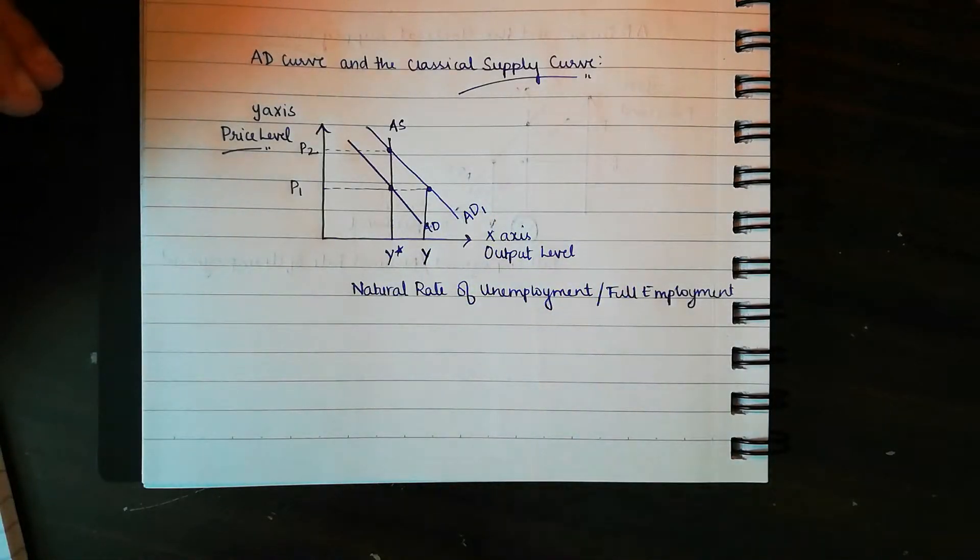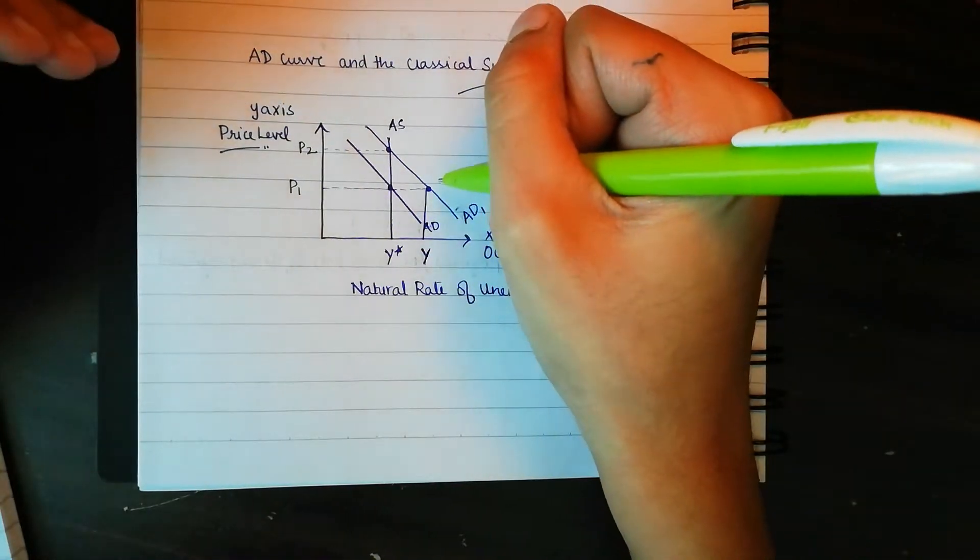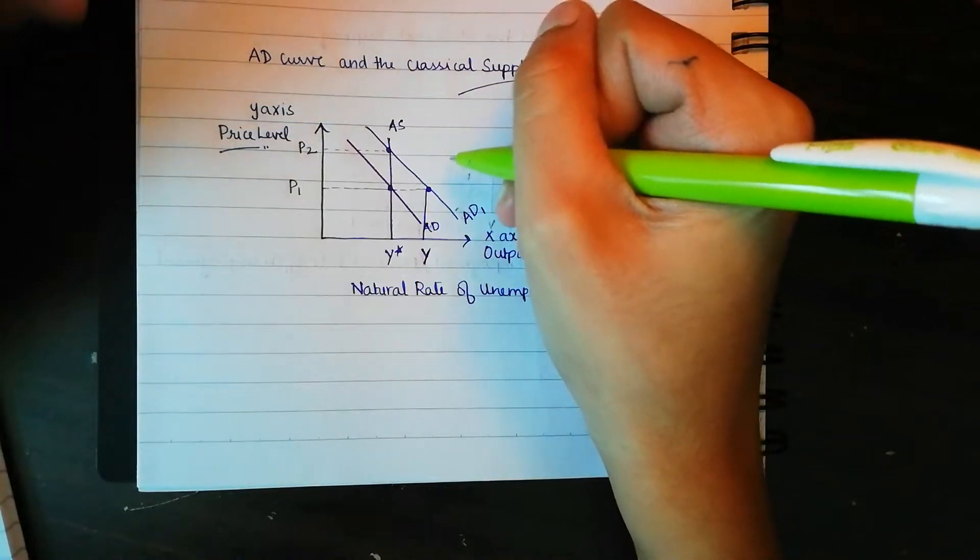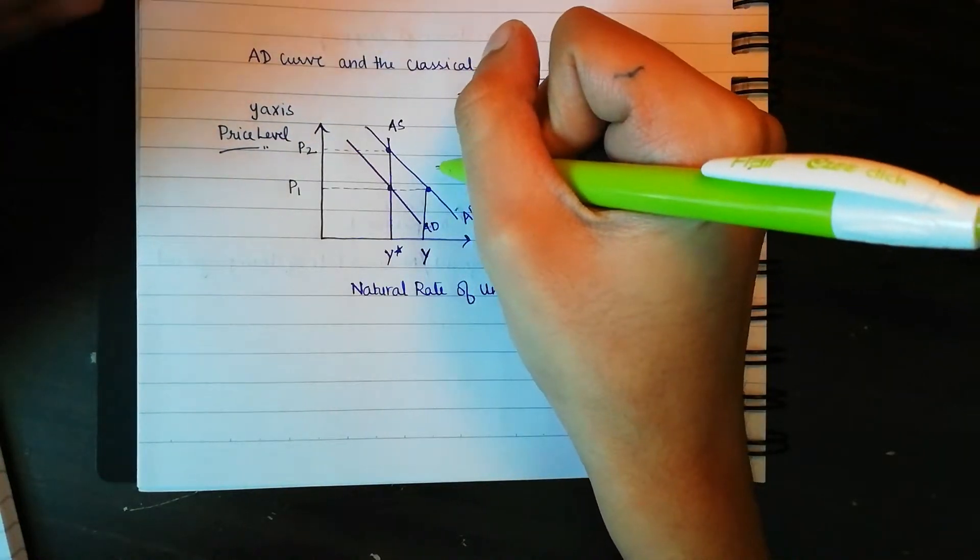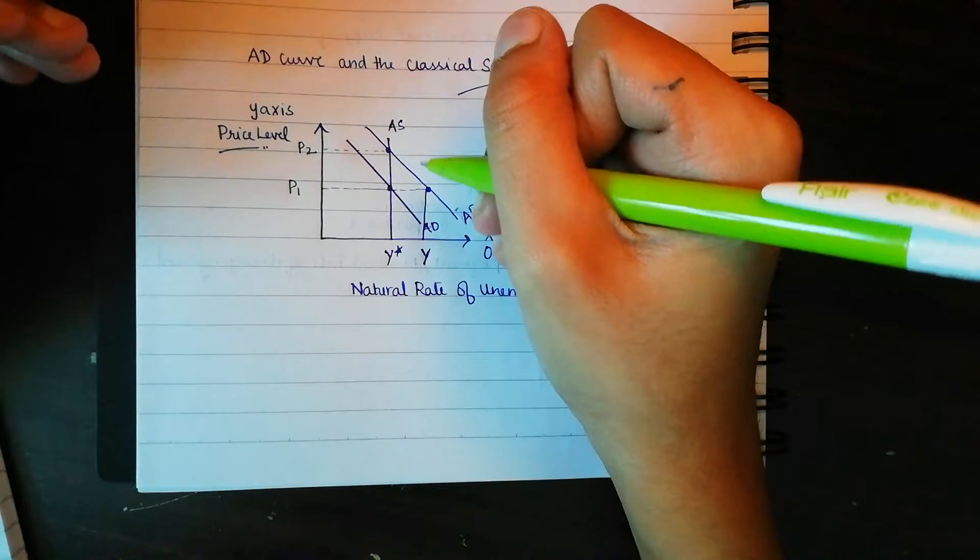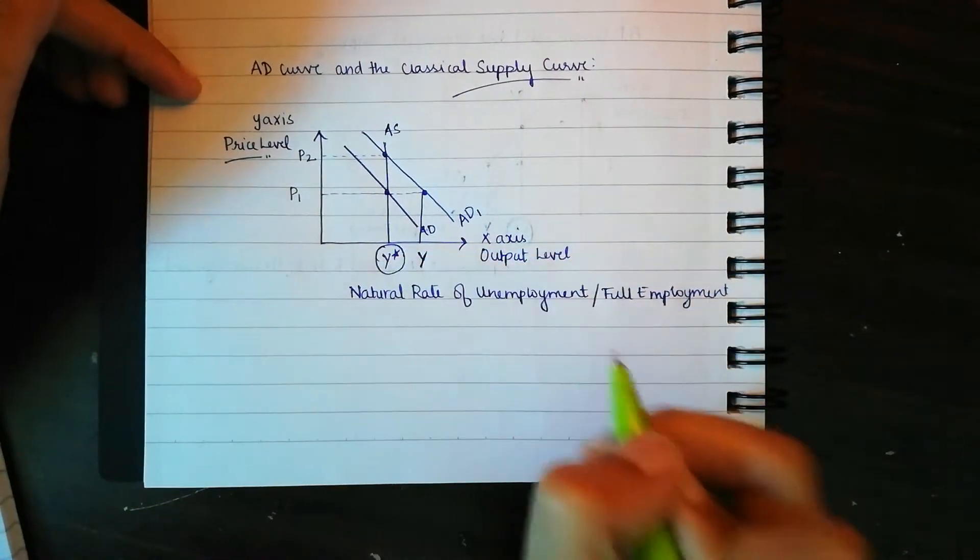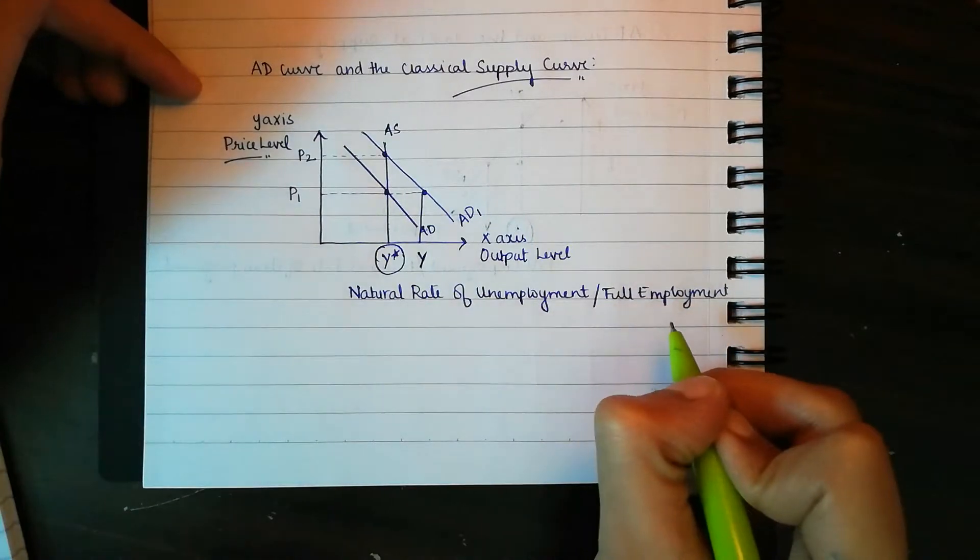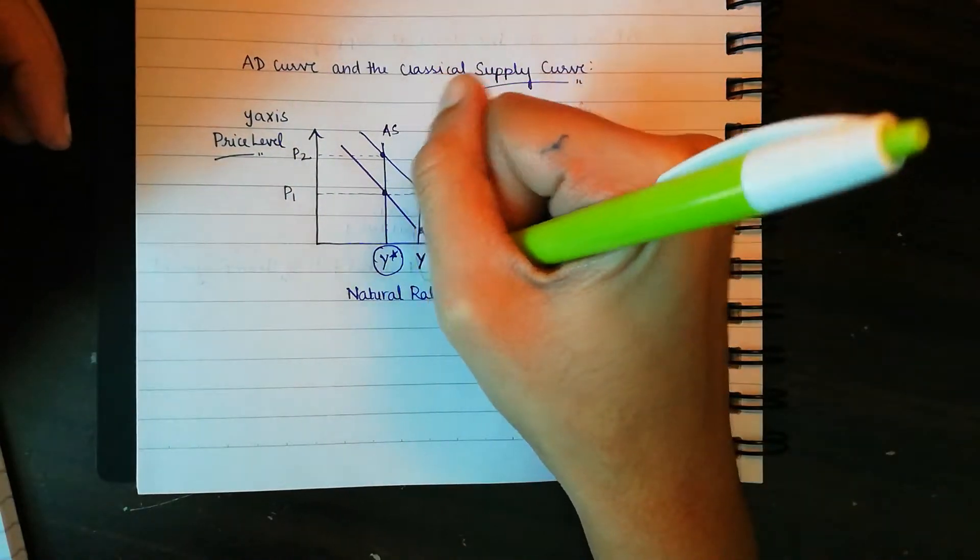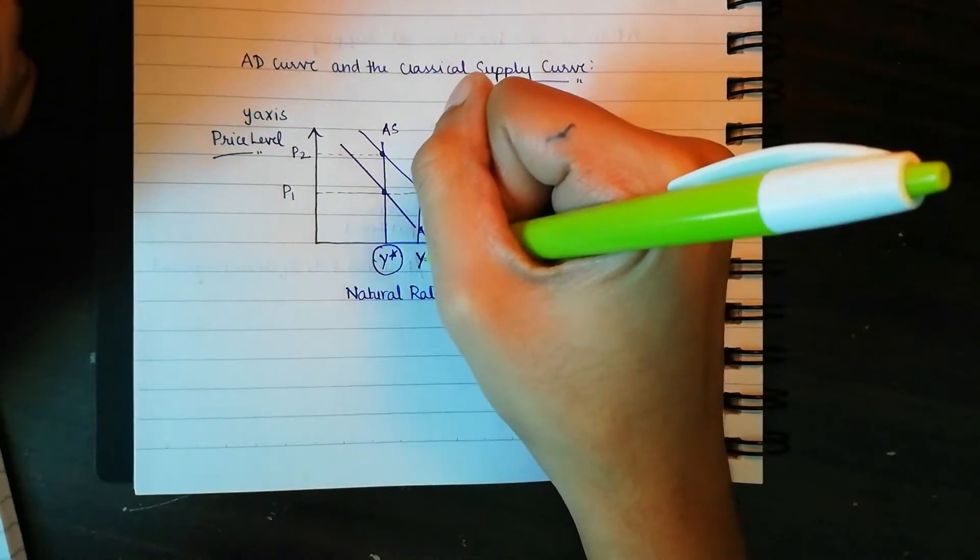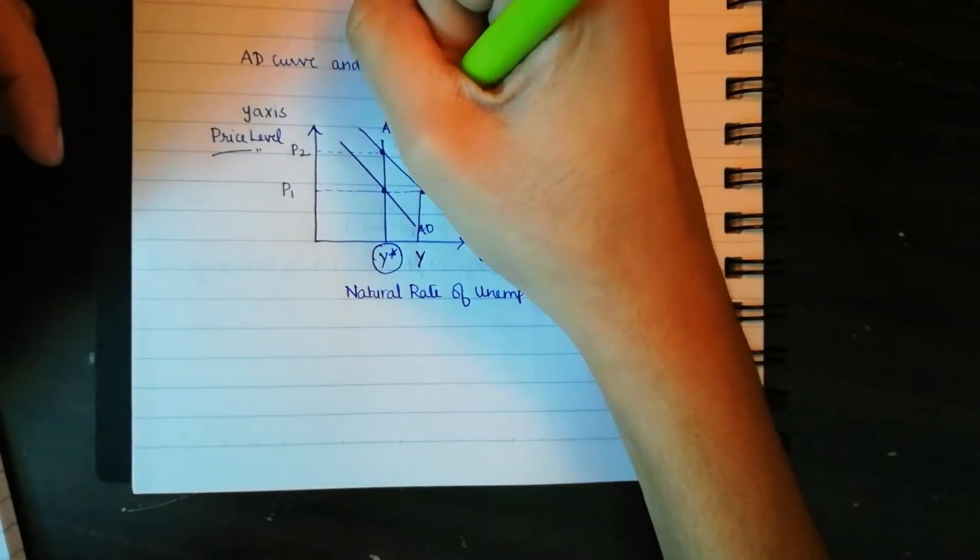But for producers it's very hard as it's very expensive. The cost of production is very high because we are already operating at full employment and a natural rate of unemployment. For producers to produce up to an output of Y, they would need to increase the cost of production.